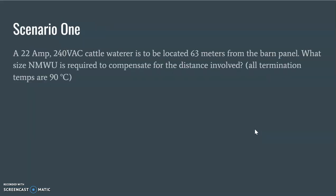Okay, so first we'll go through this scenario. We have a 22 amp load, it's a 240 volt cattle waterer, and its wire distance from the barn panel is 63 meters. We're going to feed this with some NMWU and we want to know what AWG size we're going to need for that because of the distance that's involved.